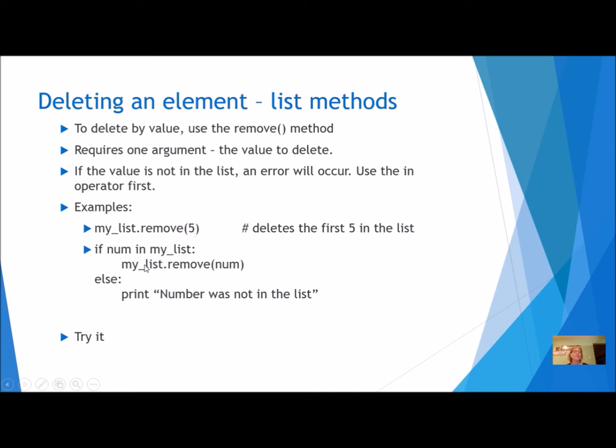Now here's a better example because I'm using the 'in' operator: if num in my_list, then I'm going to remove it. Else, I might print a message or I might not even have an else. But make sure that it's in the list before I try to remove it, so I don't get a runtime error. Let's try the remove in our program.